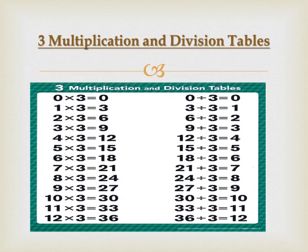Now the Division Table of 3: 0 divided by 3 equals 0, 3 divided by 3 equals 1, 6 divided by 3 equals 2, 9 divided by 3 equals 3, 12 divided by 3 equals 4, 15 divided by 3 equals 5, 18 divided by 3 equals 6, 21 divided by 3 equals 7, 24 divided by 3 equals 8, 27 divided by 3 equals 9, 30 divided by 3 equals 10.